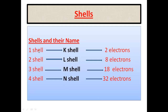For example, the first shell, the K shell, can accommodate a maximum of 2 electrons. The second shell, the L shell, has a maximum of 8 electrons. The third shell, the M shell, has a maximum of 18 electrons, and the fourth shell, the N shell, has a maximum of 32 electrons.